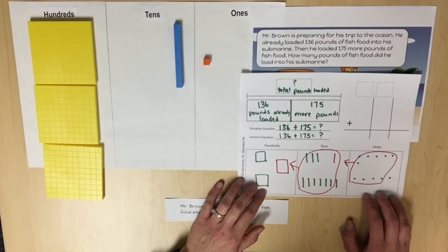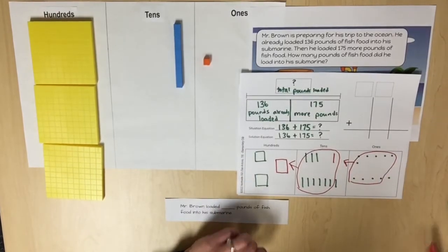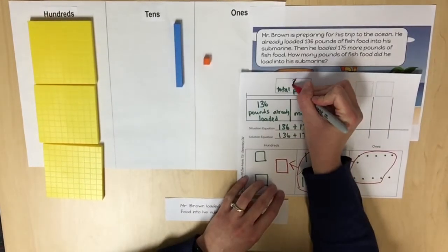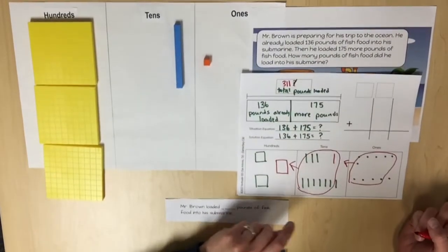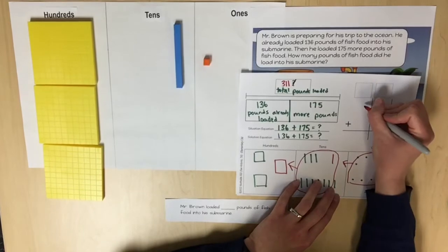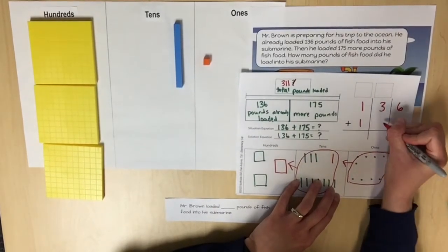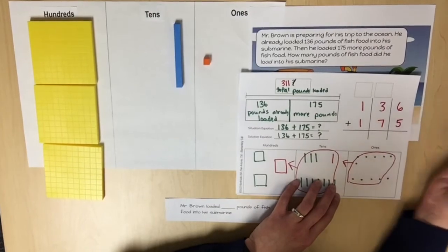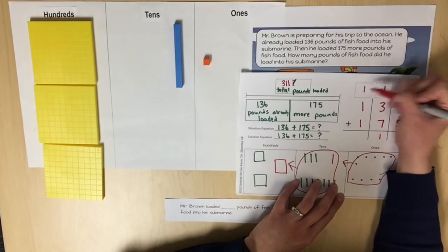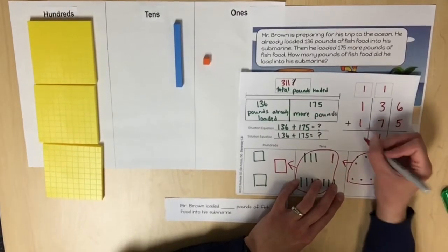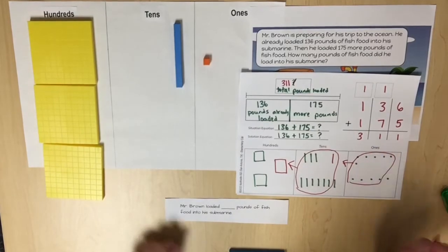Next we're going to ask students to use the standard algorithm to determine the sum. So based on my pictorial representation, I know that 311 is the total. Here in my standard algorithm, 136 joined with 175. We show that regrouping. Again, we regroup 100, and with our standard algorithm we get that result, 311.